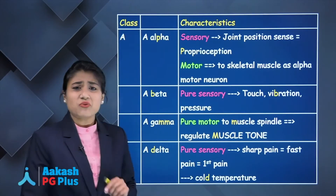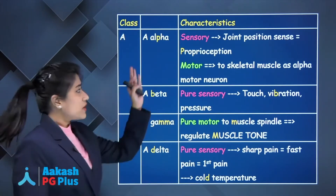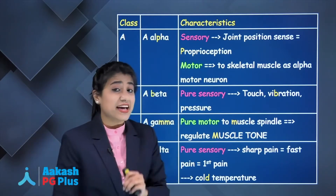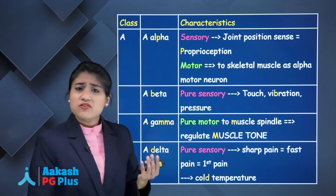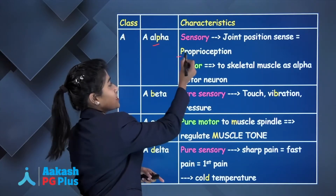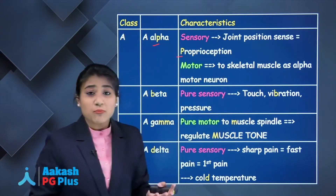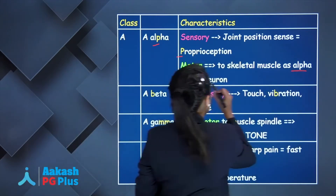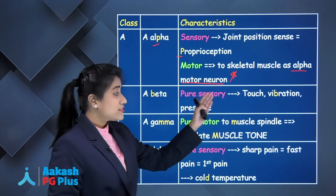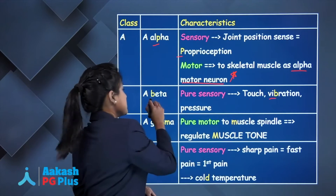A-alpha has both sensory and motor components. The sensory component carries joint position sense — proprioception — so remember 'A-alpha has a P for proprioception.' The motor component supplies skeletal muscle via alpha motor neurons. A-beta is pure sensory, carrying touch, vibration, and pressure — vibration is B, so that's A-beta.